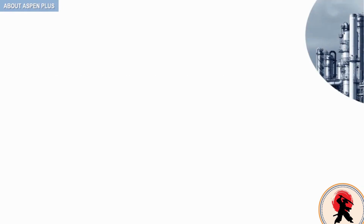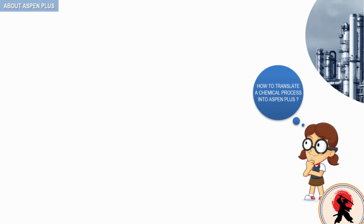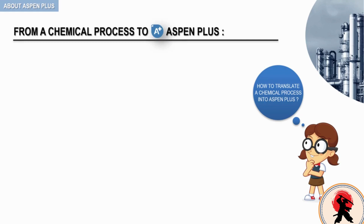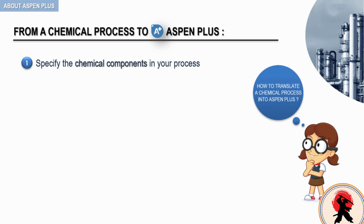How can we translate a complex chemical process into an ASPEN PLUS simulation model? You can do that by performing the following five steps. First, you need to specify the chemical components in your process — you can find these in ASPEN PLUS built-in databanks, or introduce them manually to the platform. Next, you need to specify the thermodynamic model, or property method, to represent the physical properties of your components. Examples include NRTL and UNIFAC, just to name a few.